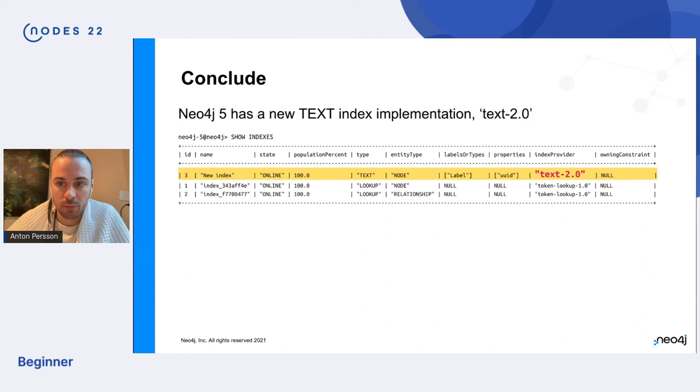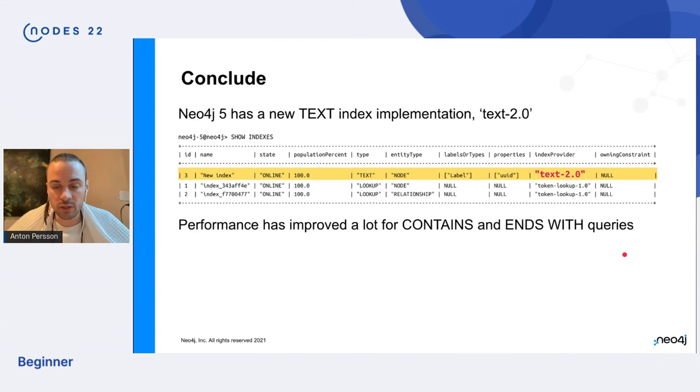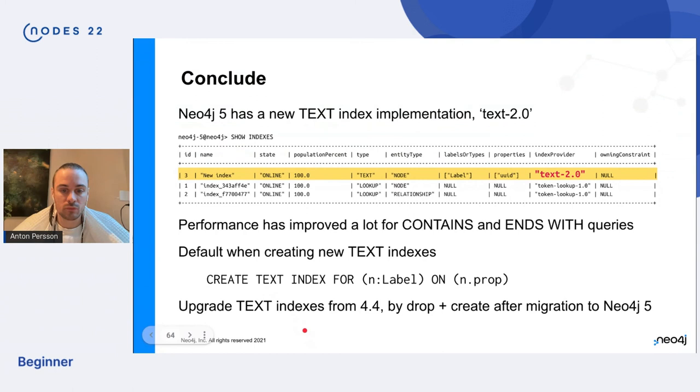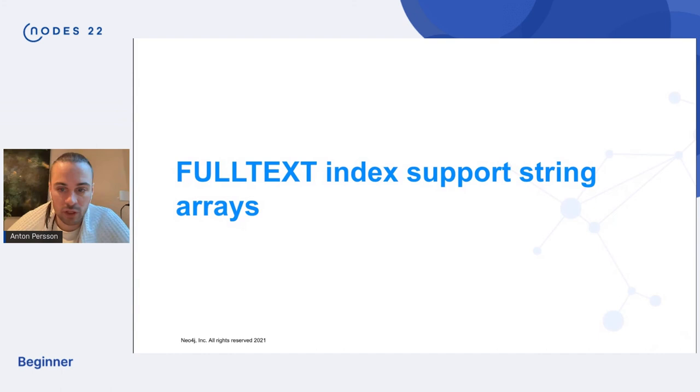Okay. So to conclude, Neo4j has this new text index implementation. You're identified by the text 2.0 string. The performance has improved a lot for contains and ends with. It is the default that you will get when you create a text index and to upgrade your existing text indexes that you're having from four four, you need to drop and create them again in Neo4j 5. There's no automatic migration.